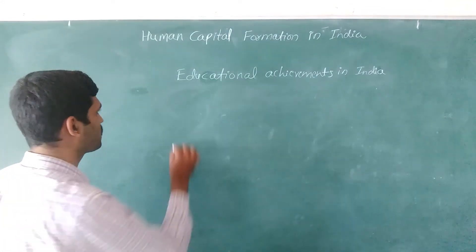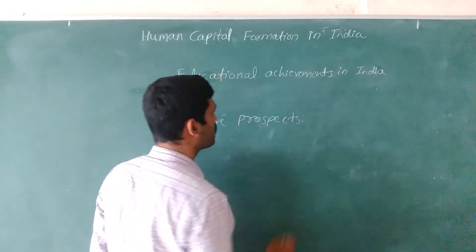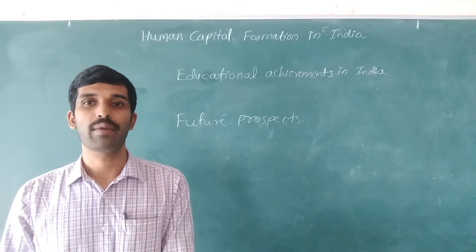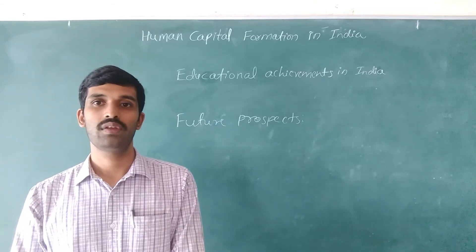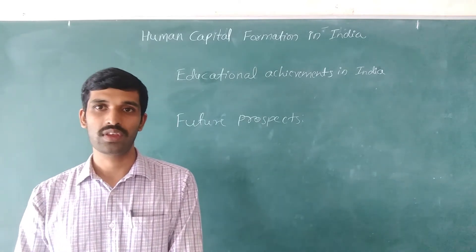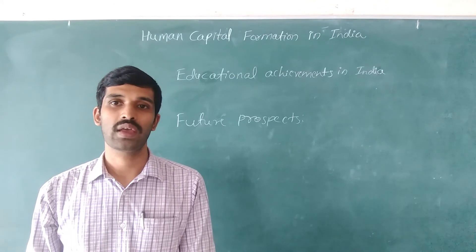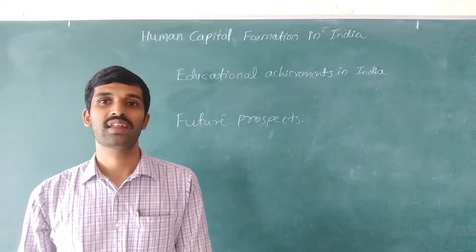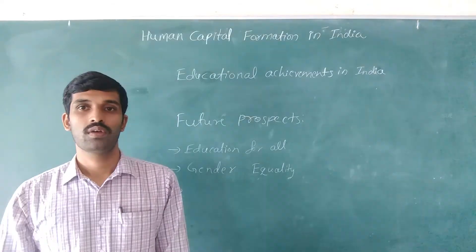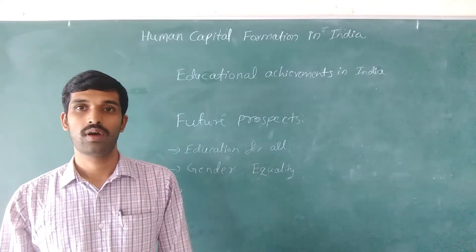The next topic is future prospects. Though the literacy rate is increasing year by year, the absolute number of illiterates in India remains a concern. In 1950, when the Constitution of India was passed by the Constituent Assembly, it was noted in the Directive Principles of State Policy that the government should provide free and compulsory education for all children aged 6 to 14 years within 10 years of commencement of the Constitution. Regarding gender equality, the difference between the literacy rate of males and females is narrowing.